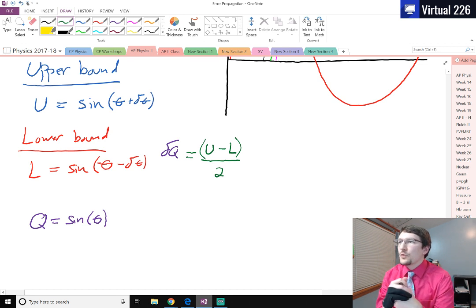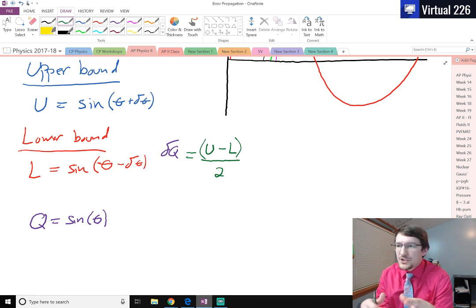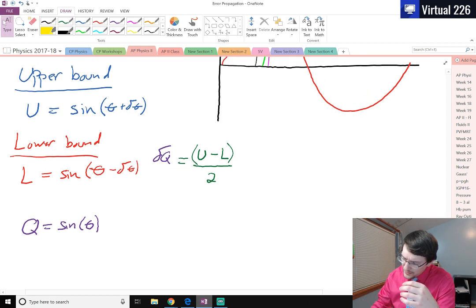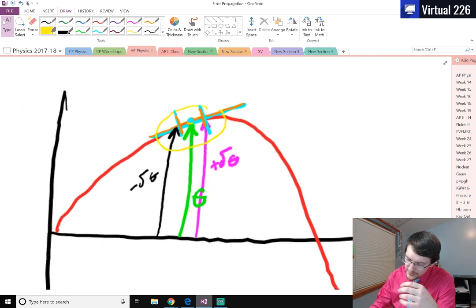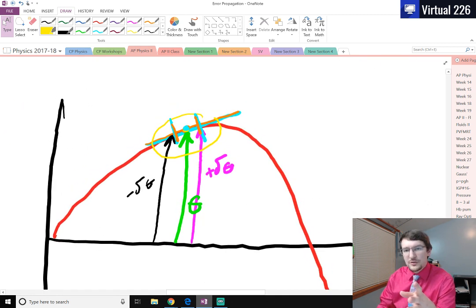And we can do this for sine, cosine, tangent, all of the inverse functions of those, really anything that's smooth. And we can make this assumption where if we take only a little step in each direction, we have a fairly linear line.